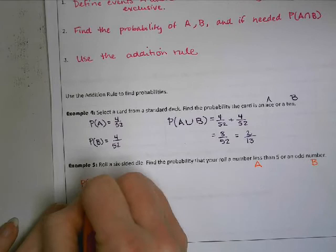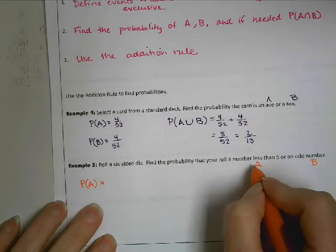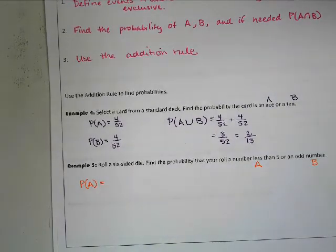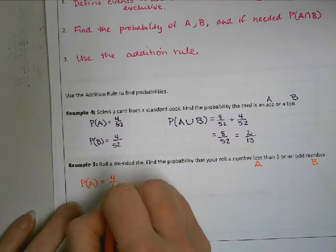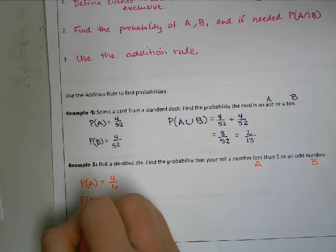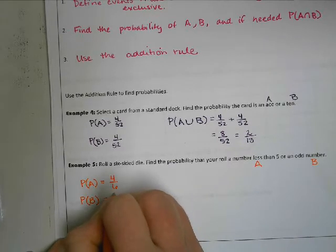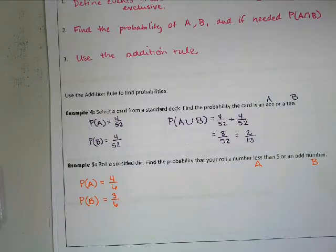So let's see. The probability of A, rolling a number less than 5. What's the probability? Now it says less than, not less than or equal to, just less than. 4 over 6. The probability of B, an odd number. They are not mutually exclusive because you can roll a number that's less than 5 and also odd.